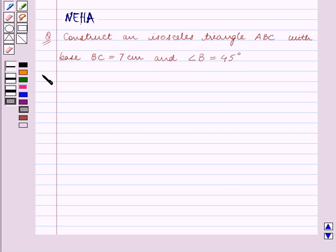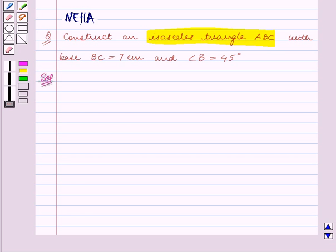Let's start the solution now. In the question we are given an isosceles triangle ABC.